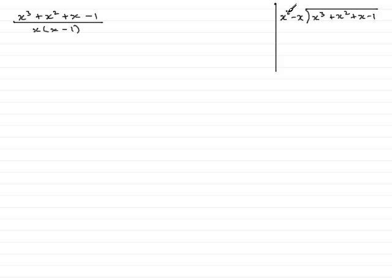I multiply the x squared by an x to get x cubed here, so we'll put an x up there. So multiplying x with x squared minus x in the usual way gives x cubed minus x squared. Subtract for the remainder.